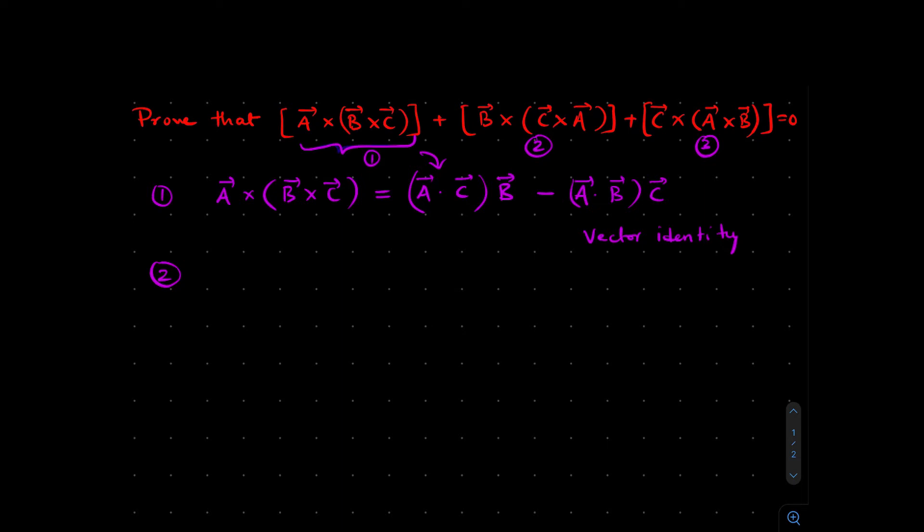Now equation 2: B cross (C cross A) can be written as (B dot A) times C minus (B dot C) times A.